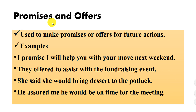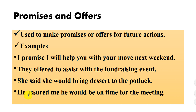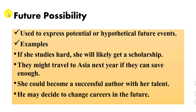Number five is promises and offers. The future tense is used to make promises or offers for future actions. For example: I promise I will help you with your move next weekend; they are going to assist with the fundraising event; she said she would bring dessert to the potluck; he assured me he would be on time for the meeting.